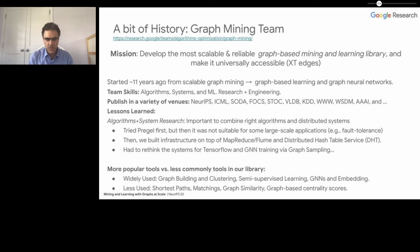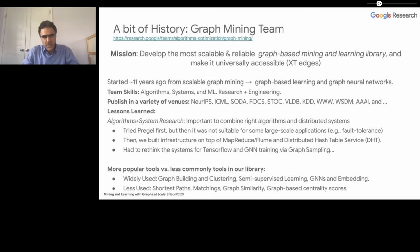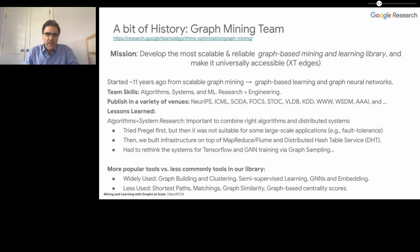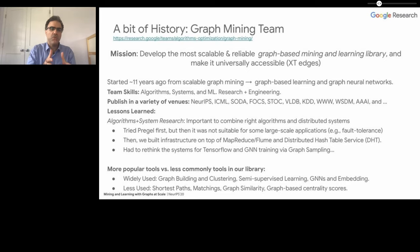We also learned many lessons about which tools are most useful. For example, we have tools on graph building, graph clustering, and semi-supervised learning that are very popular. At the same time, tools like shortest path matching, graph similarity, and graph-based centrality scores are used but not as commonly — partly because other systems may have their own specific implementations of, for example, shortest path computation.